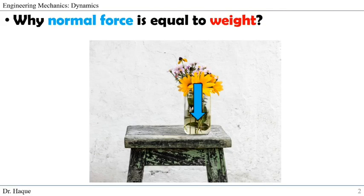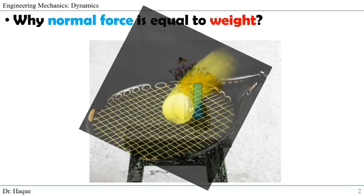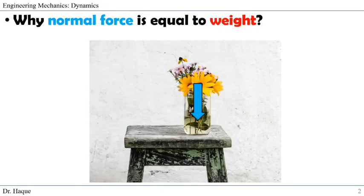The reason for the vase not free-falling or going through the table or bouncing back is because there is an equal, exactly opposite force called normal force balancing the system.